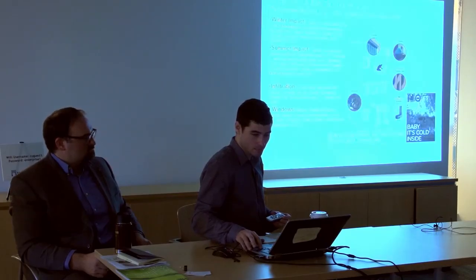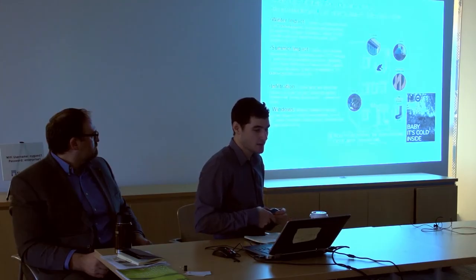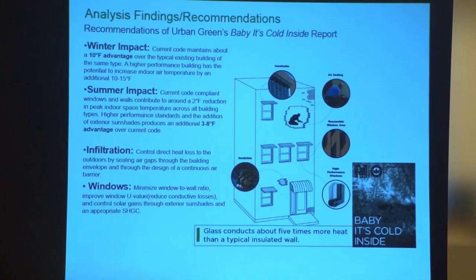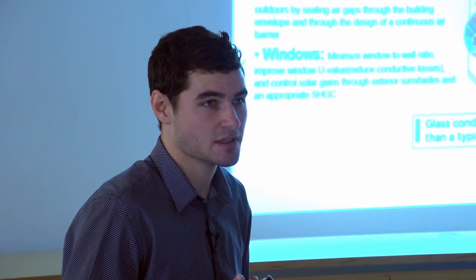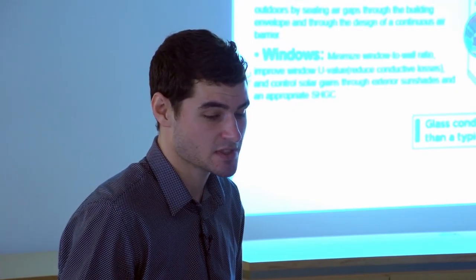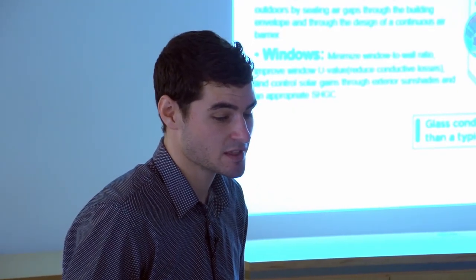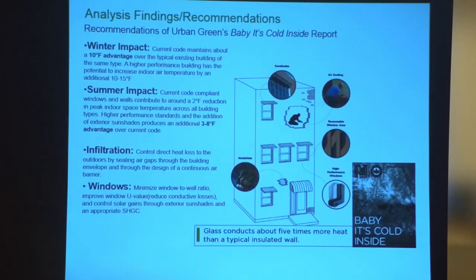So at this point, the results of this tool you'll find are matched very closely generally to some of the earlier research for Baby It's Cold Inside. And in summarizing in the winter, air infiltration or reducing air leakage through the facade and insulating the facade is very critical. In the summer, it's about shading the windows or selecting an appropriate glass with the right solar heat gain coefficient to minimize those solar gains.